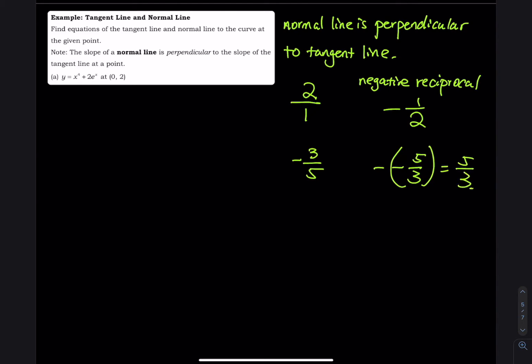That's how you do negative reciprocal. So let's get the function, we have y equals x to the 4 plus 2e^x, and then my point (x,y) is equal to (0, 2). So speaking of tangent line, tangent line means you need to find the derivative, right? So let's find the derivative.